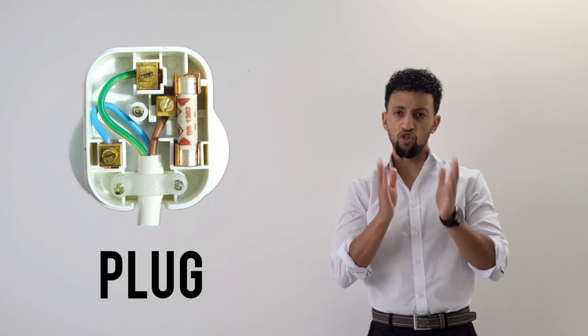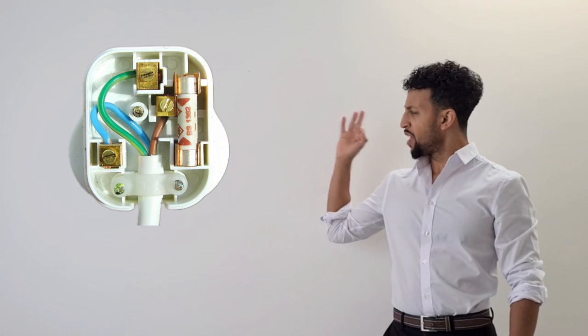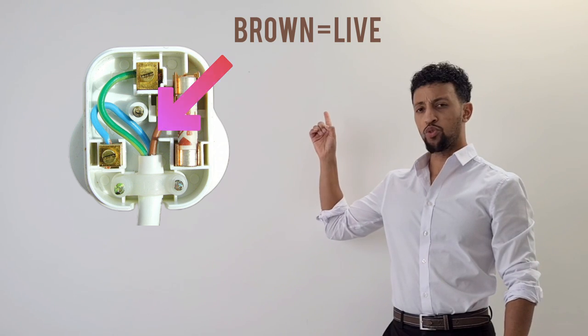Starting with the plug, this is what's required. This one is the fuse, these three are the wires. Brown is called live,